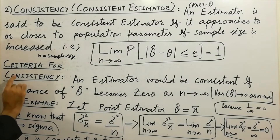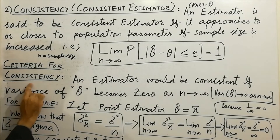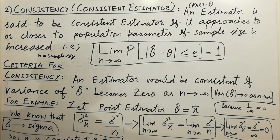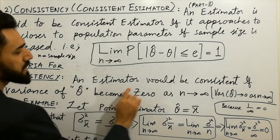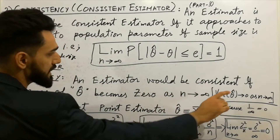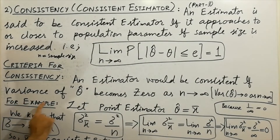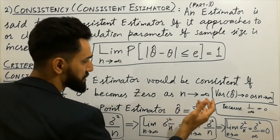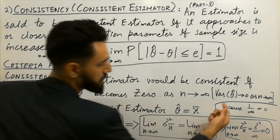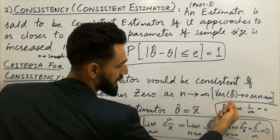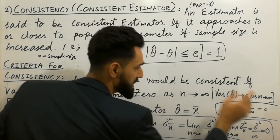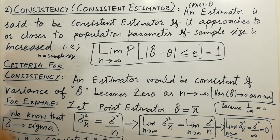Now let's discuss a very important point: what would be the criteria for checking the consistency of an estimator? The criteria is that an estimator would be consistent if the variance of theta hat becomes zero as n approaches infinity.